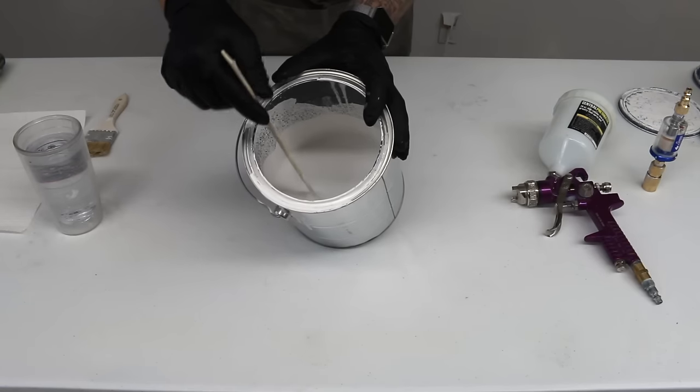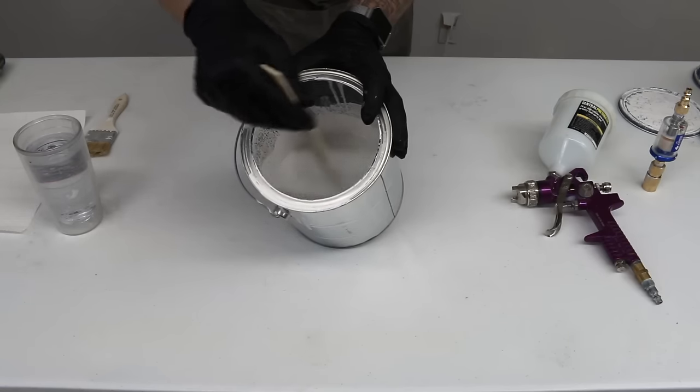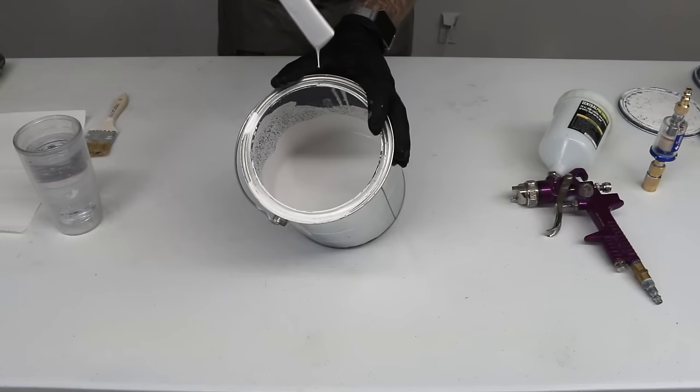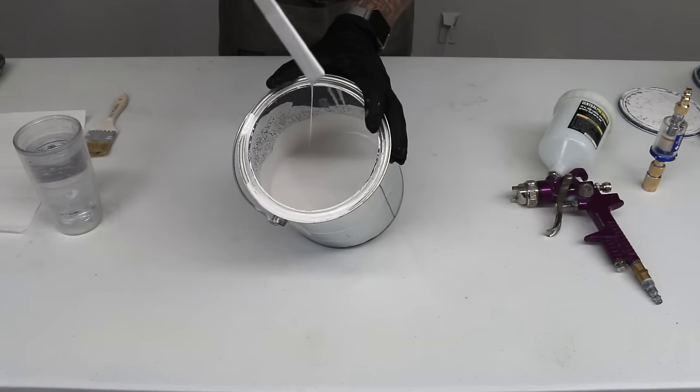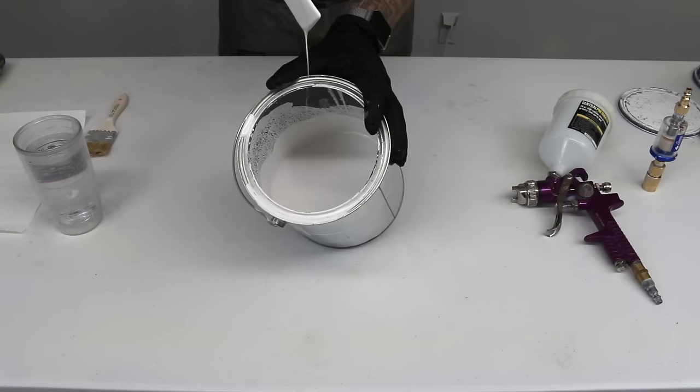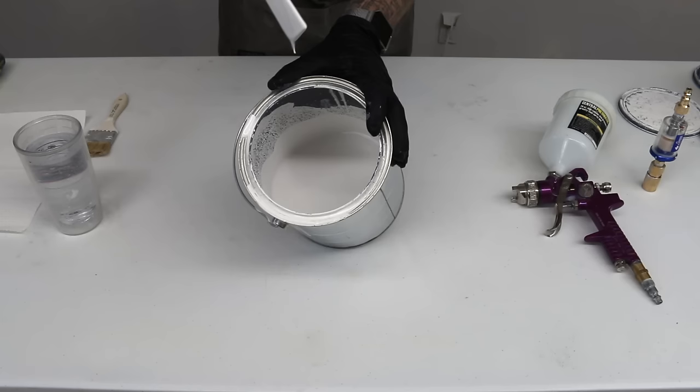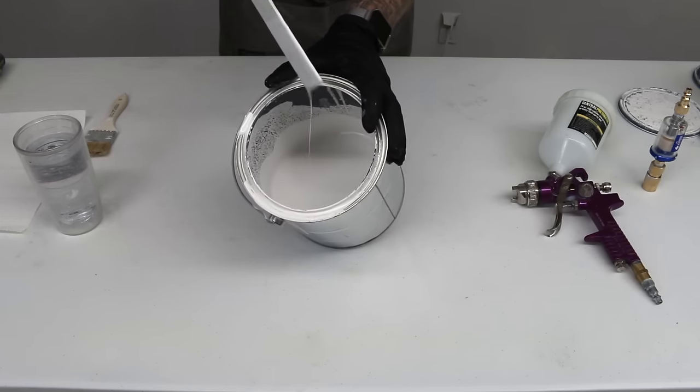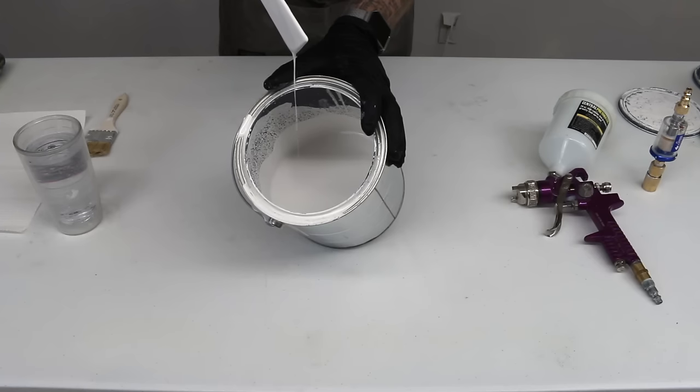Now, let's take a look at our primer. This is Bullseye 1-2-3 for all projects. You can see the thickness by watching it drop off of the stir stick. You see how it kind of drips just a little bit and then it starts running and then dripping, running, and then dripping.